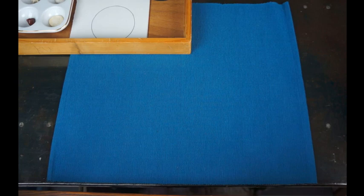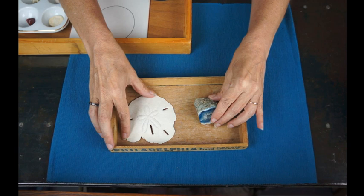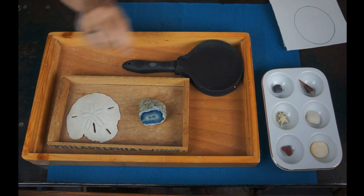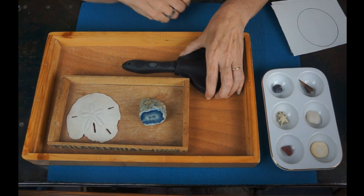Here is an observation tray for a slightly younger child. This would come out, this would slide in like this, and a younger child has something to observe very carefully with the magnifying glass.